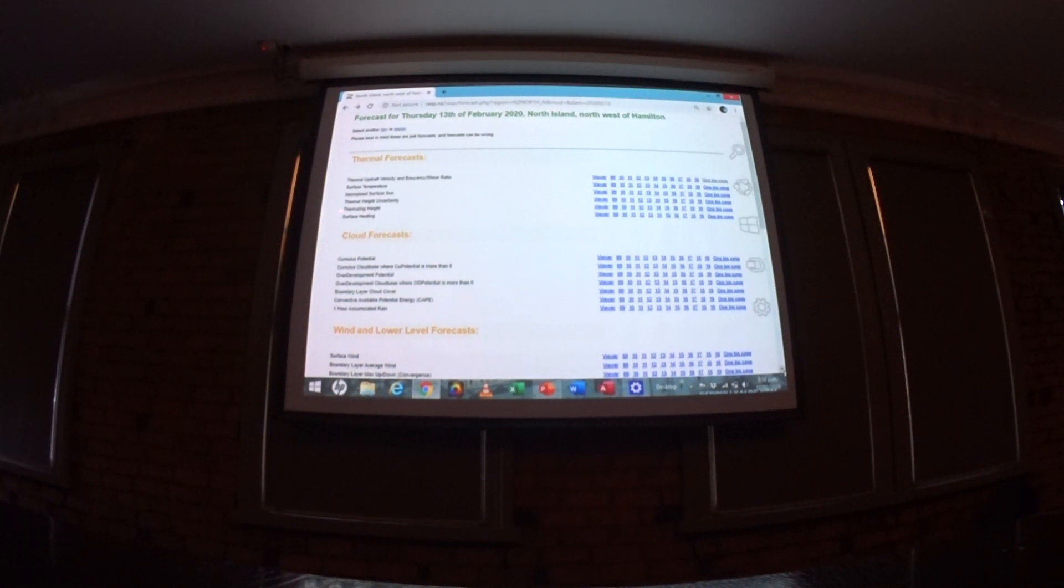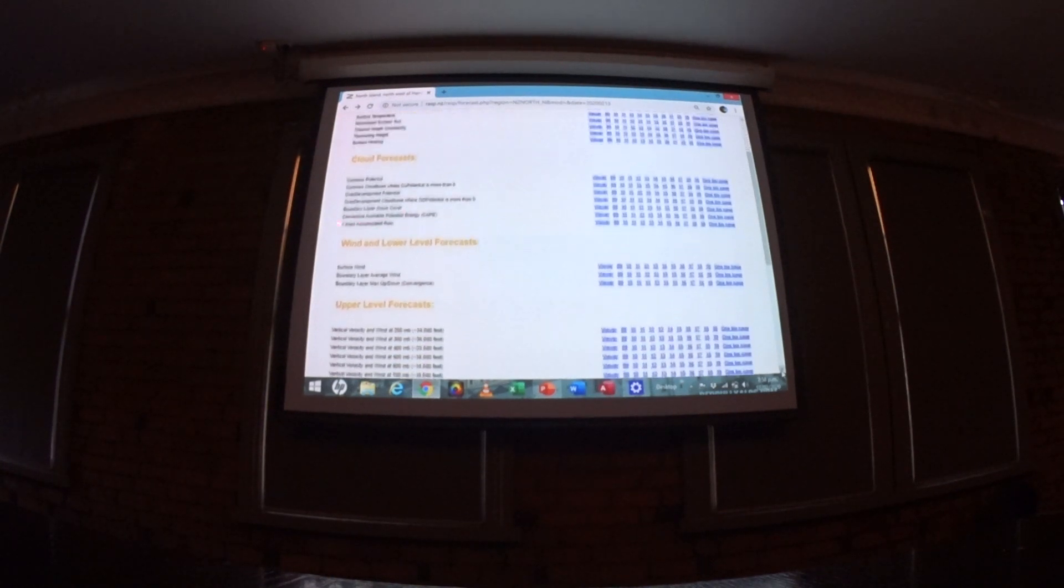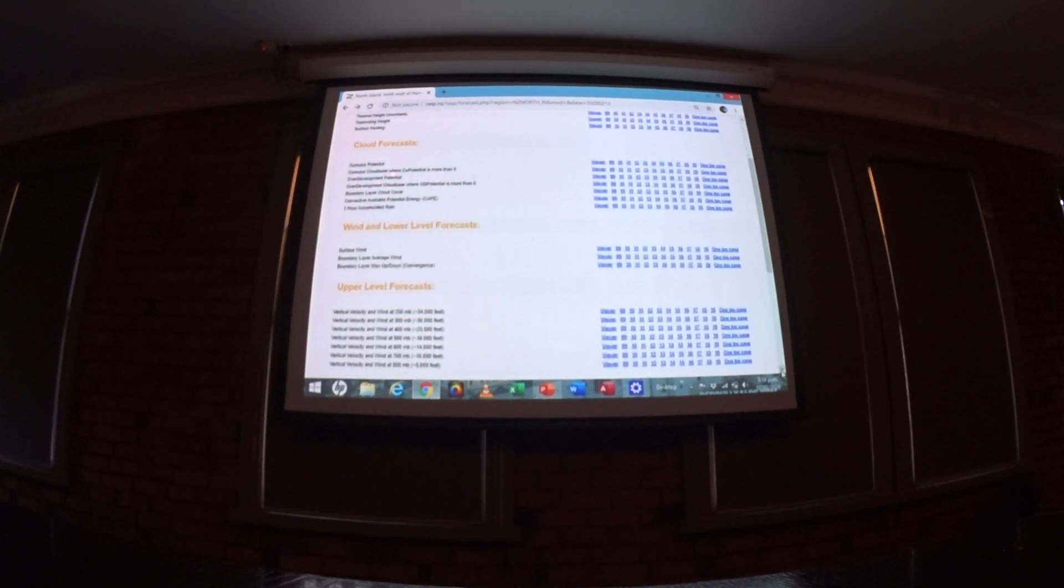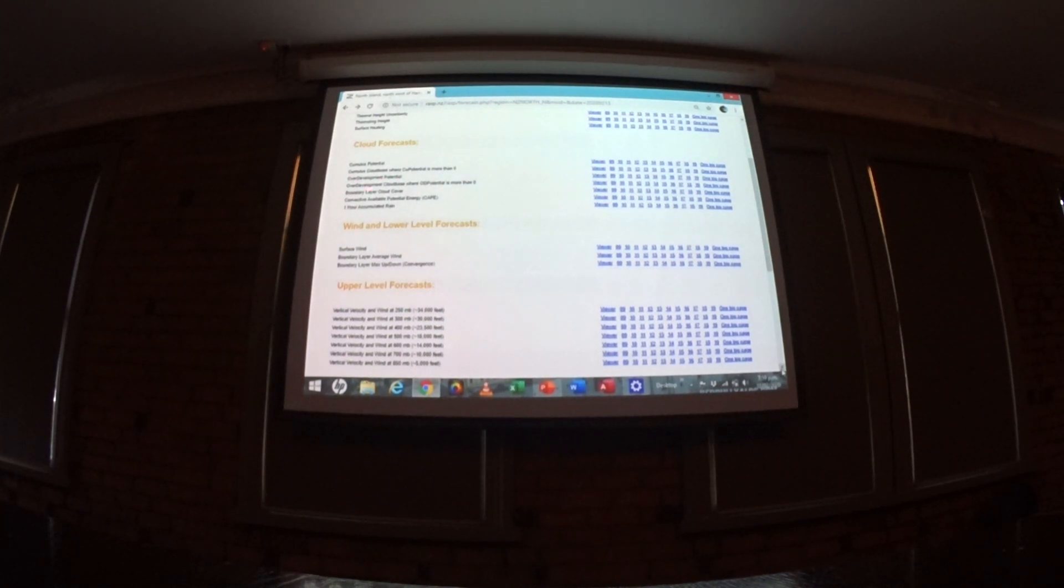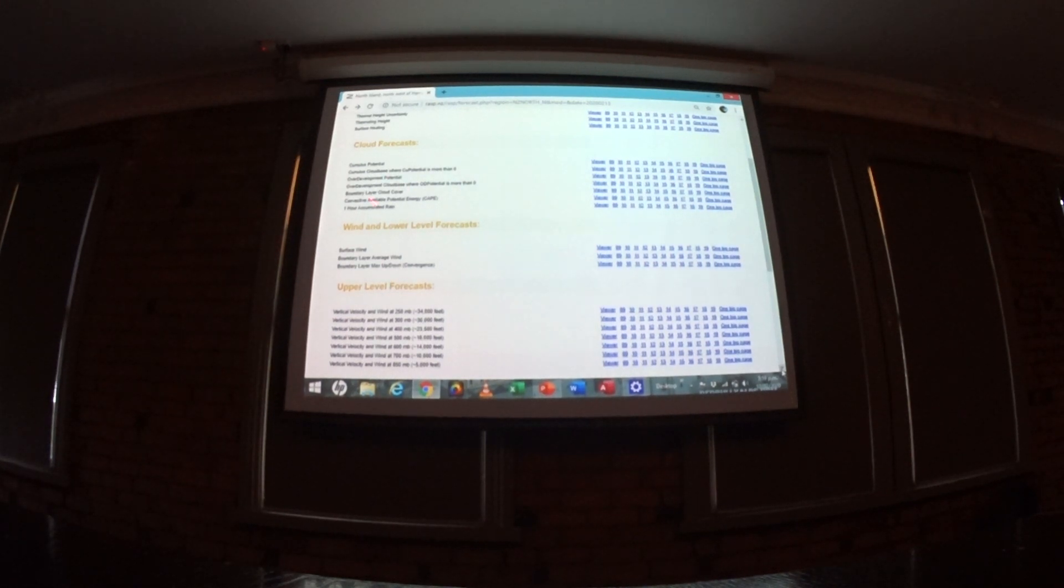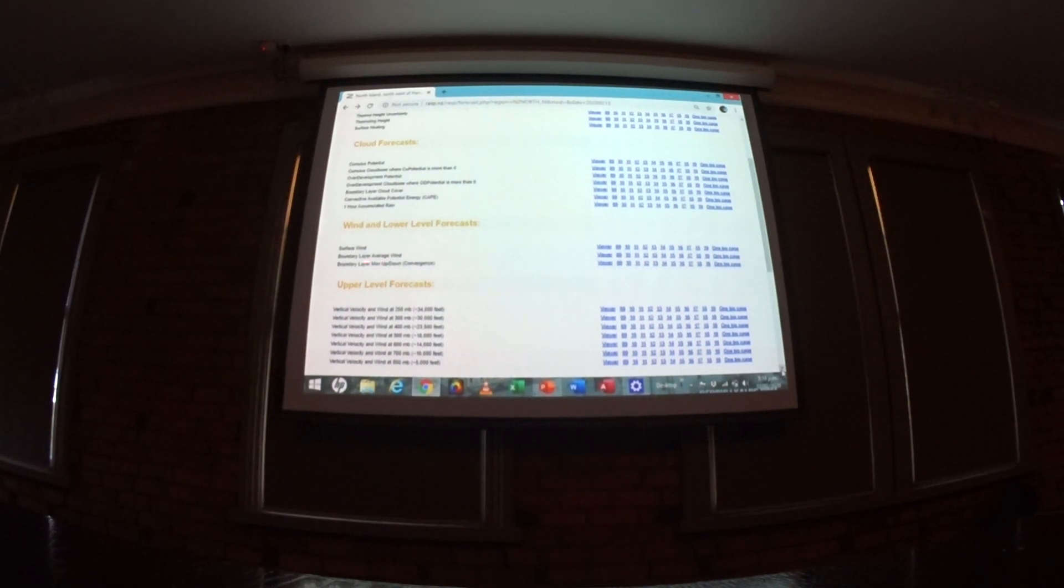I use that page a lot. Sometimes I look at thermal height. Sometimes I look at over-development cloud base. If you're going to look at these cloud ones, I've been told to use the ones where it says the potential is more than zero, instead of just cumulus potential.